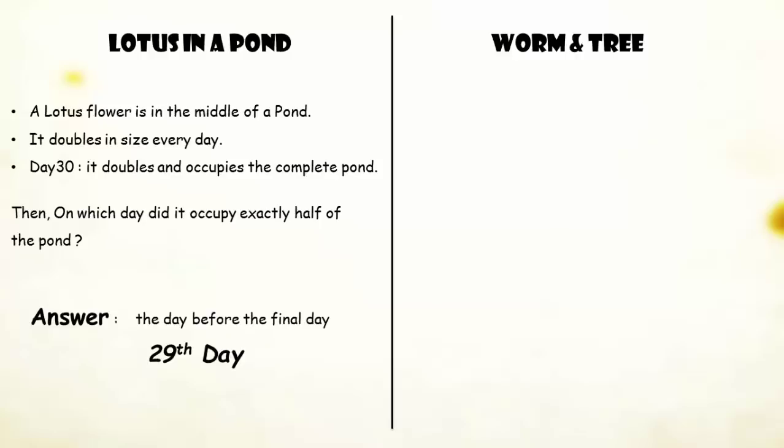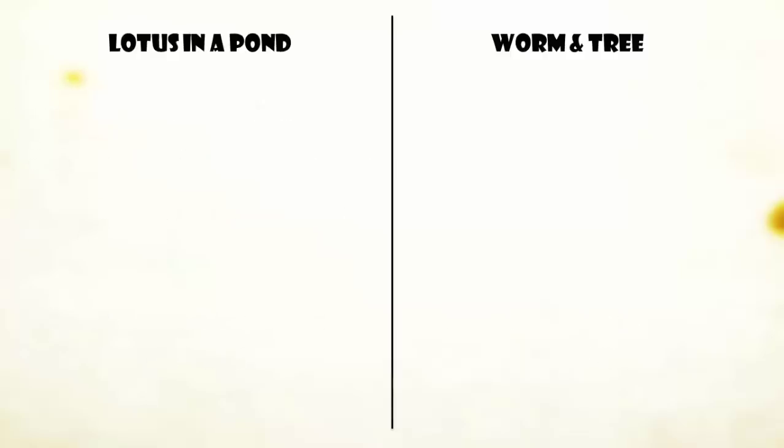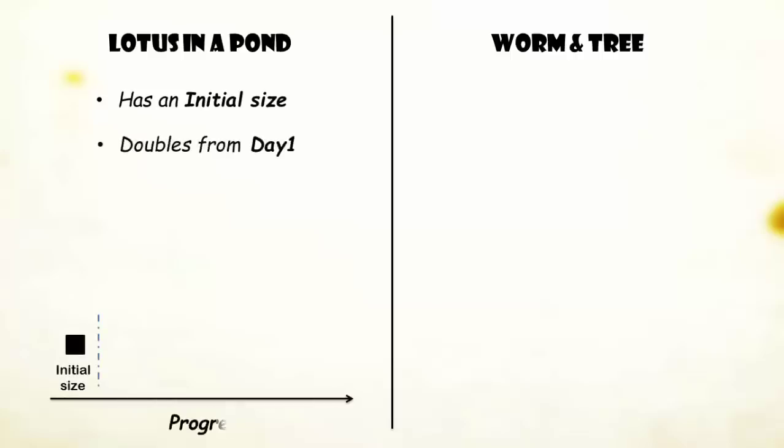If you analyze the two riddles carefully, you will find a key difference between them which leads to completely different answers. And the difference is that in the case of lotus riddle, the lotus is already existing. That means it has an initial size and it starts to double itself right from day 1.